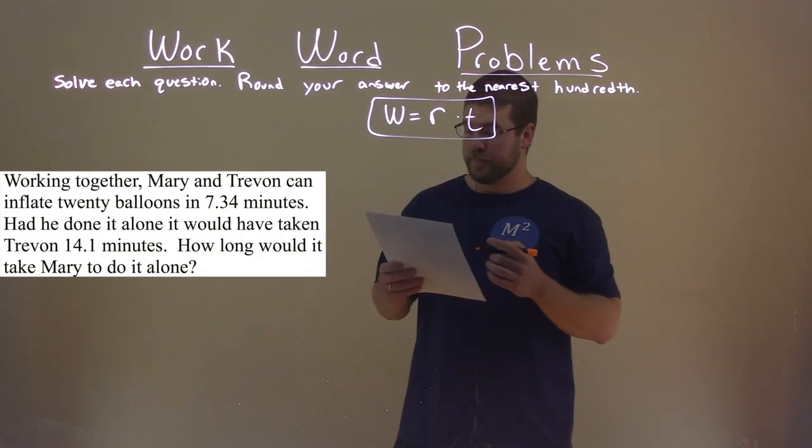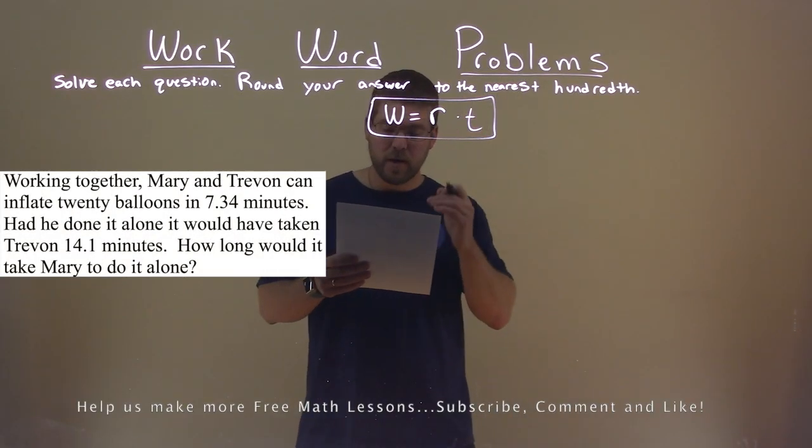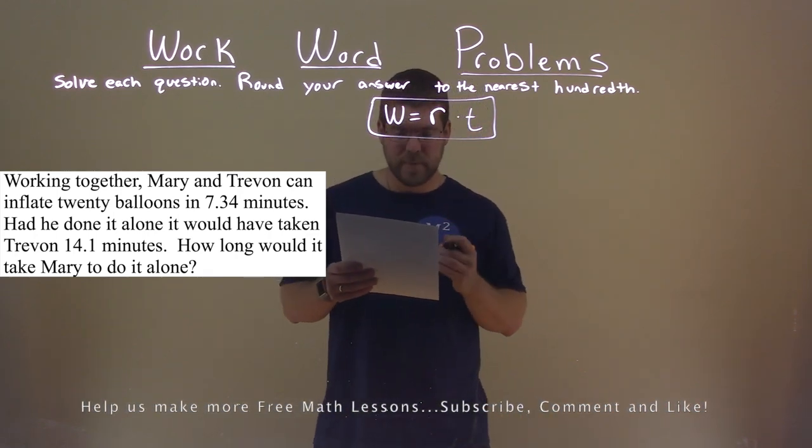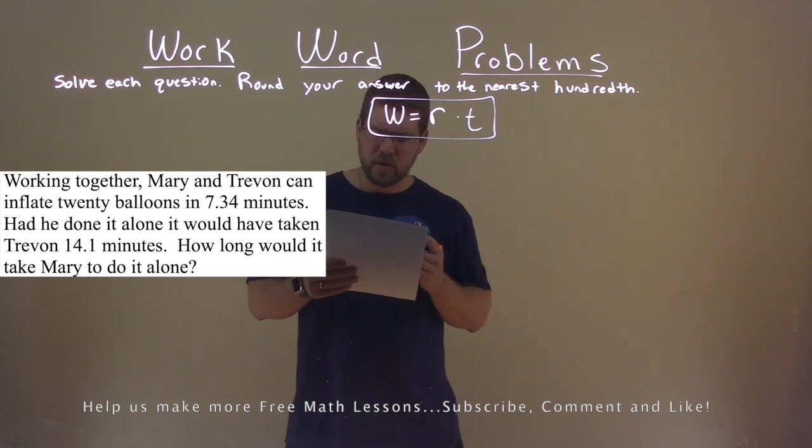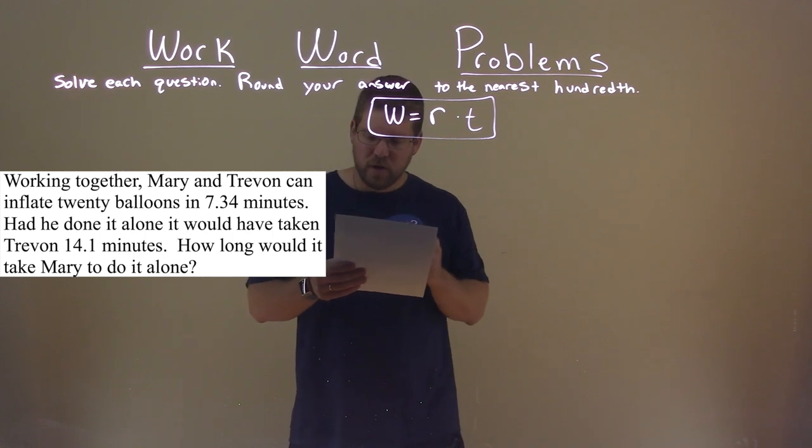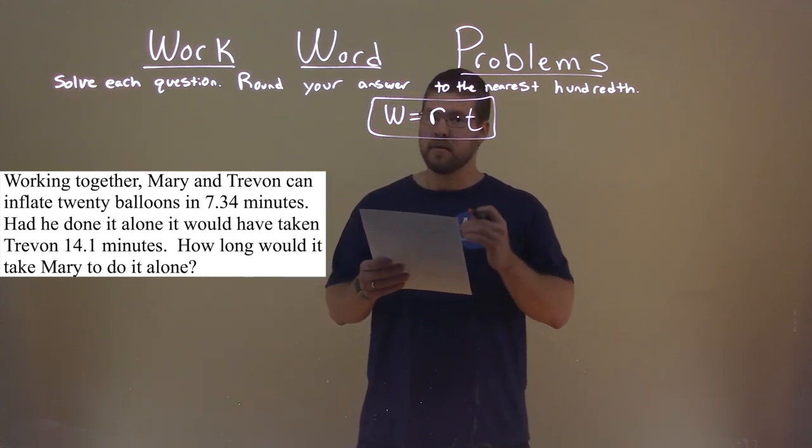We're given this problem right here. Working alone, Mary and Trayvon can inflate 20 balloons in 7.34 minutes. Had he done it alone, it would have taken Trayvon 14.1 minutes. How long would it take Mary to do it alone?